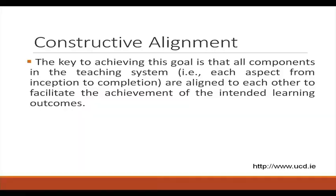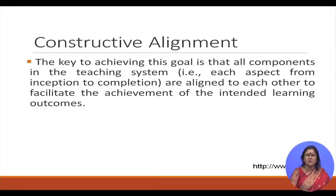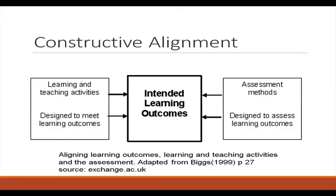The key to achieving the goal of constructive alignment is that all components in the teaching system — from inception to completion — are aligned to each other to facilitate the achievement of the intended learning outcome. The curriculum, intended learning outcomes, teaching methods and resources, and assessment tasks and criteria for evaluating are all aligned. Alignment is central to effective assessment, and there should be a clear relationship between the learning outcome and the assessment.